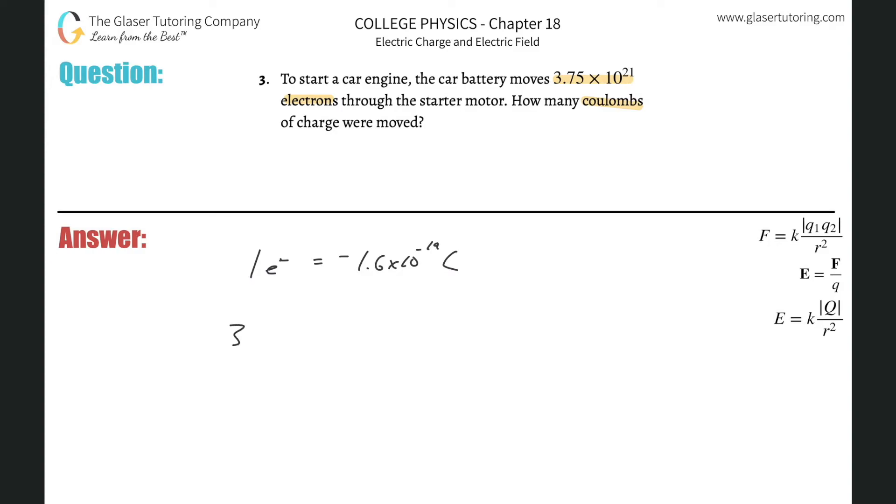the conversion. So it's 3.75 times 10 to the 21 electrons, multiplied then by—electrons on the bottom—and for every one electron there is 1.6 times 10 to the negative 19 coulombs of magnitude of charge.